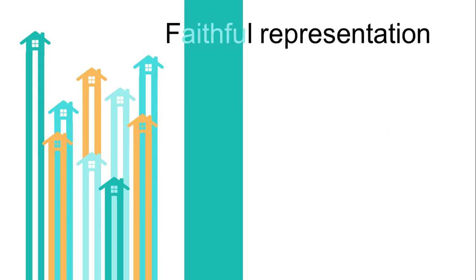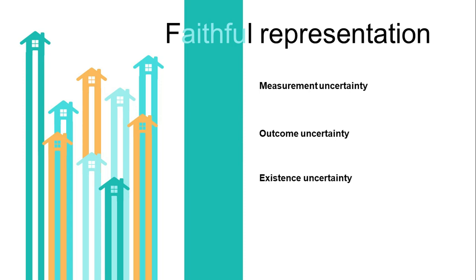In the case of faithful representation, the concern is always about uncertainties. In the previous chapter we mentioned measurement uncertainty and the use of estimates. For faithful representation considerations on measurement basis, we also have to consider outcome uncertainty — the uncertainty about the amount or timing of any inflow or outflow of economic benefits from an asset or liability — as well as existence uncertainty, or the uncertainty whether an asset or liability exists. Outcome and existence uncertainty would sometimes contribute to measurement uncertainty, and these should be considered in the choice between historical cost and current value.